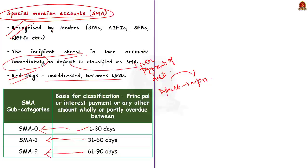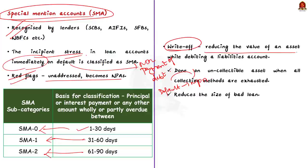See here, you should also know that after declaring an asset as NPA, banks sometimes do a thing called write-off. What is a write-off? Here the write-off refers to reducing the value of the asset while debiting a liability account. It is done because the asset is considered uncollectable and is considered as such little value that its continuance as a bankable asset is not warranted. Banks write-off loans are assets when all the collection methods are exhausted. And importantly, this write-off reduces the size of a bad loan, that is NPA. So these are the basics you need to know about NPA.